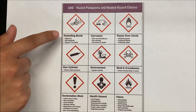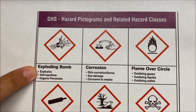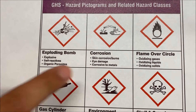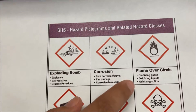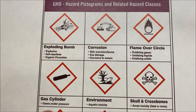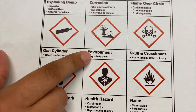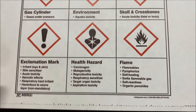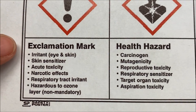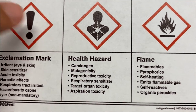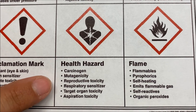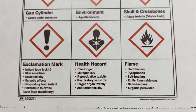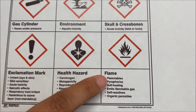More specific hazards within each pictogram: the exploding bomb means explosive. Corrosion is very important — it can cause skin burns, eye damage, or be corrosive to metals. The flame over the circle is oxidation. The gas cylinder shows the substance is under pressure. There is an environmental hazard symbol. The skull and crossbones indicates acute toxicity — either fatal or just toxic. The exclamation mark has specific hazards you can look into further. The health hazard pictogram can indicate aspiration hazard, target organ effects, or multiple other health concerns. Flammable hazards are also included.